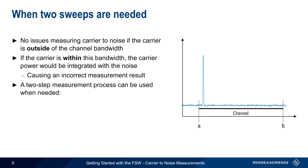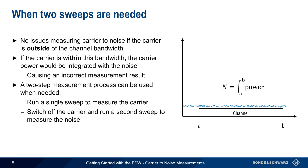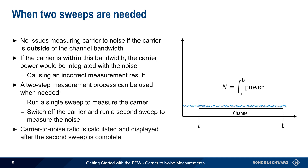In this case, a two-step measurement process is needed. First, a single sweep is run and the power in the carrier is measured. Then the carrier is switched off, and a second sweep is run to measure the noise alone. In this way, the Carrier-to-Noise ratio can be calculated and displayed after the second sweep is complete.